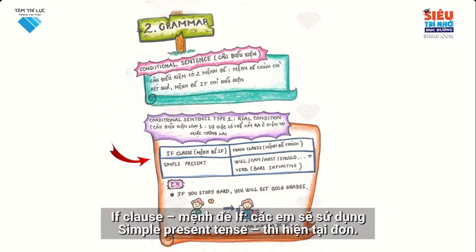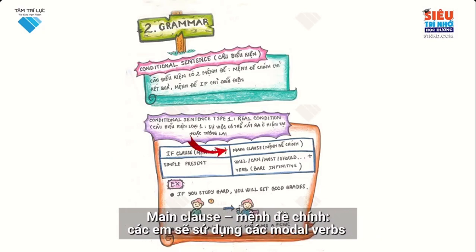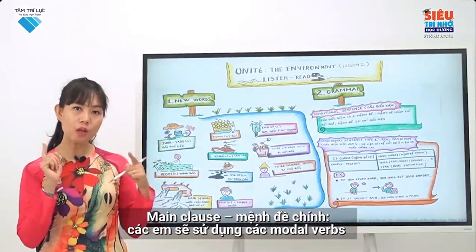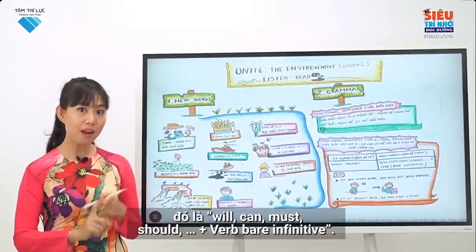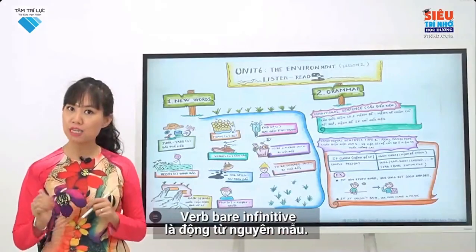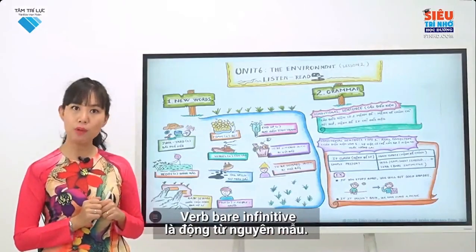Conditional sentences have some types; however, we only study Type 1 today. Conditional sentence Type 1 — Real condition — describes an event that may happen at present or in the future. For the if clause, you will use simple present tense. For the main clause, you will use modal verbs — will, can, must, should, etc. — plus verb bare infinitive, which is the base form.